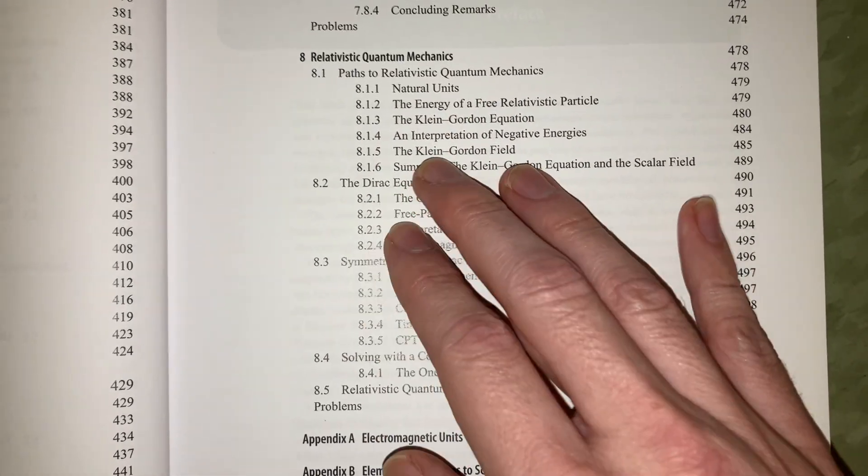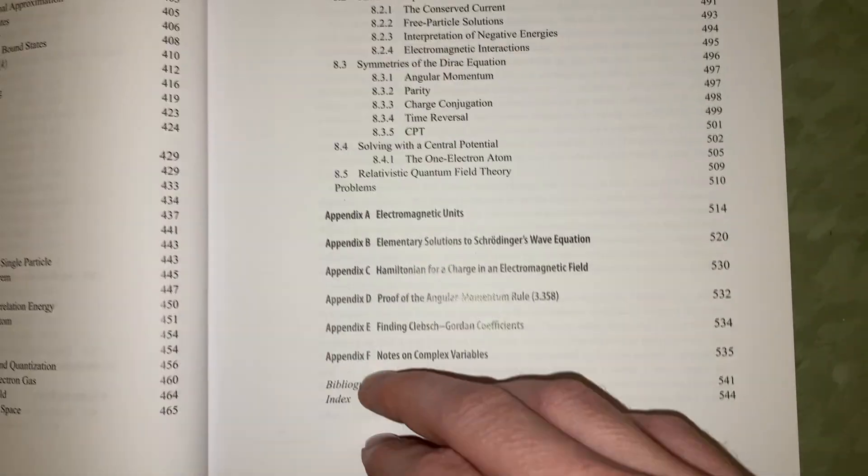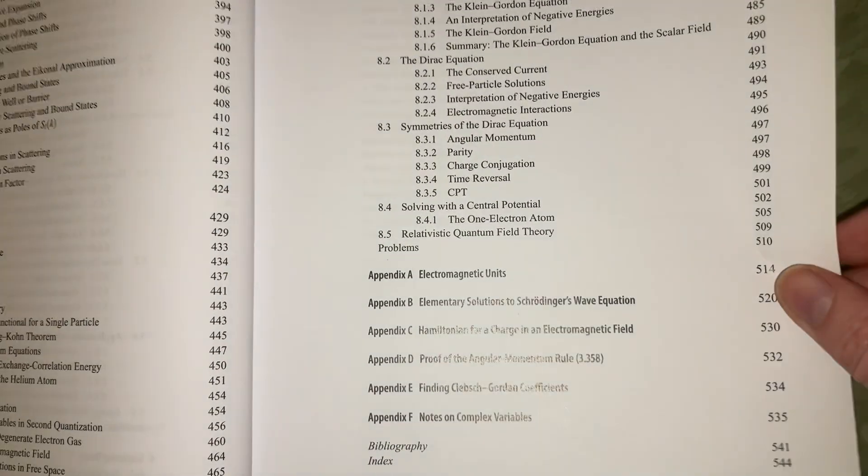We have relativistic quantum mechanics, you know, Klein-Gordon equation, etc., etc. The Dirac equation. And that's basically going to be the end of this book here. So that's really kind of cool.